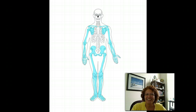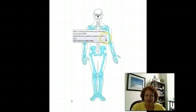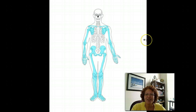The axial skeleton has 80 bones, which is indicated in the white area here, and it includes the bones of the head, the face, the spinal column, and the bony thorax, which includes the sternum.